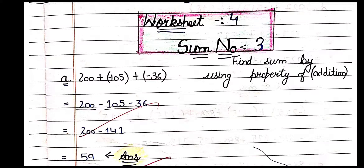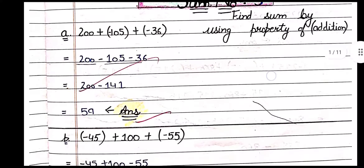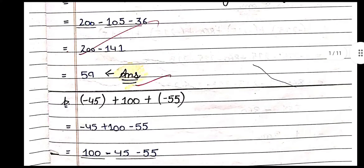There is no need to solve by taking two integers at a time. Rearrange all positives in front and all negatives at the back. Add all positive numbers, add all negative numbers, then there is a minus sign between them — different signs means we subtract. So 200 minus 141, answer is 59.